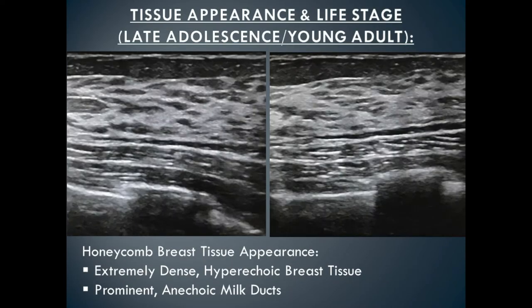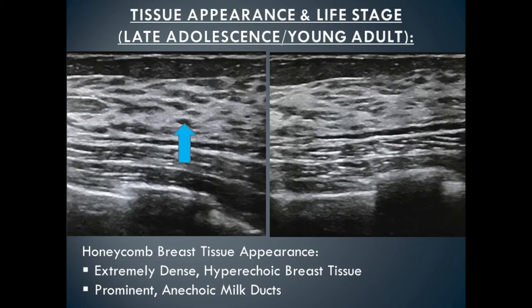In the next stage of development, during late adolescence and young adulthood, the tissue has an appearance called the honeycomb appearance. It's called this because the white glandular tissue against the little black lines forming the milk ducts makes it look like a honeycomb. The tissue pattern during this stage tends to be very dense, and because that dense tissue is white on ultrasound, it's easy to see the anechoic milk ducts against it.